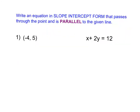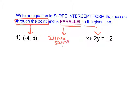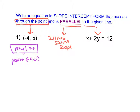Now what we're going to do on this slide is write the equation in slope-intercept form for a line that passes through this point right here and is parallel to the given line. Before we can start to write the equation of our new line, we need to think about what the word parallel means — parallel means that these two lines have the same slope. So my line goes through the point negative 4, comma 5, and it is parallel to this line over here, which means they have the same slope.